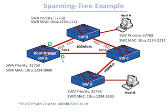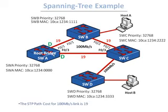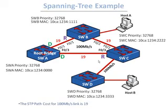The next step is determining the root ports on every non-root bridge. All links have the same bandwidth of 100 Mbps, so the cost is 19 for each. Switch B has two paths to the root bridge: through F01 costing 19, or through F02 costing 38. Switch B chooses F01 as its root port. Similarly, switch C determines F03 is its root port — the port with the lowest cost to the root bridge.